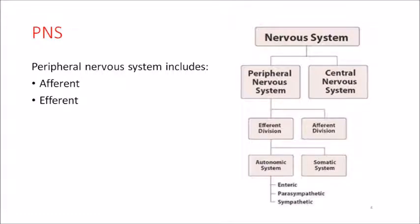Let us learn from the basics. We have two nervous systems: central nervous system and peripheral nervous system. The CNS means brain and all the cranial nerves; the remaining is the peripheral nervous system. The peripheral nervous system includes two divisions: afferent and efferent. Afferent means coming from the periphery towards the spinal cord; efferent means going out from the spinal cord towards the peripheries. The efferent division is classified into autonomic nervous system and somatic system. The autonomic system can be put into three groups: enteric, sympathetic, and parasympathetic.